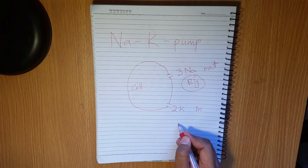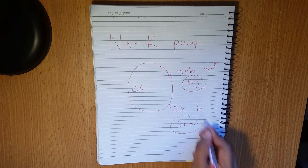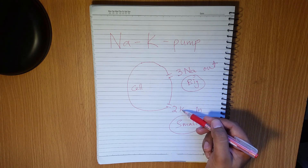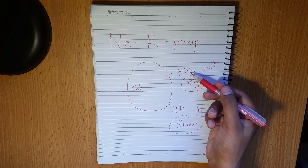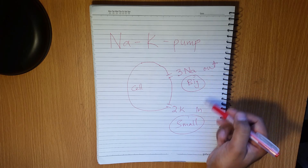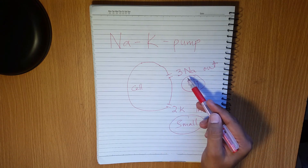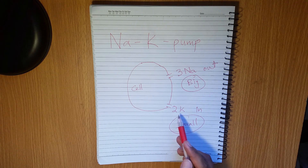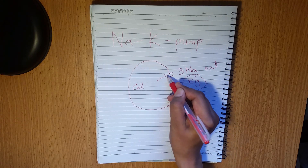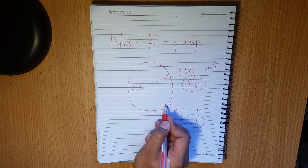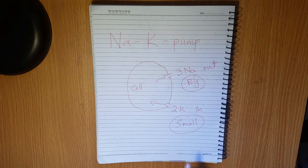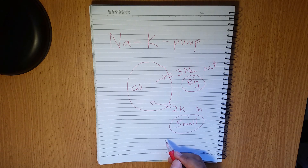On the other side, these are all small: two is smaller than three, potassium K has one letter which is less than Na's two letters, and 'in' has fewer spellings than 'out'. So you can easily remember that three sodium moves out of the cell and two potassium moves into the cell in the sodium-potassium pump. Three sodium move out and two potassium move in — by this way you can easily remember the sodium-potassium pump.